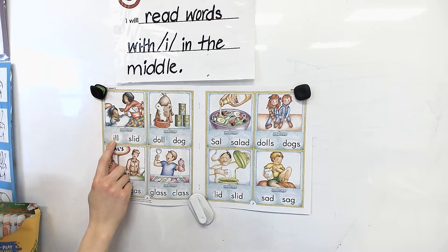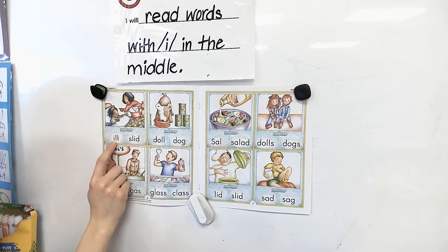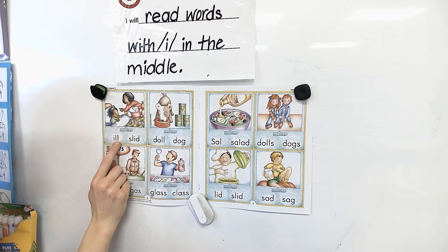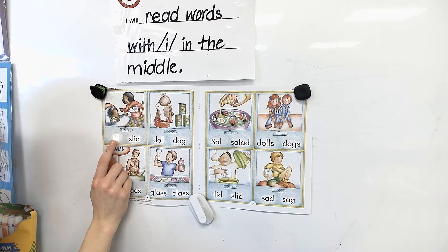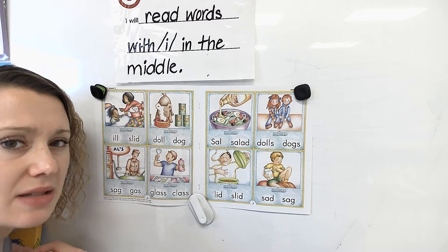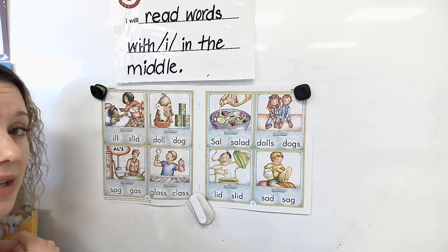I want you to touch underneath the I. We're going to blend these and read them together. Ready? I says ih, L says l. And when there's two of the same letter, we just say it one time. So read it again with me — ih, l. Ih, l. Do it a little faster — ill. Ill. So this word says ill. Do you remember what ill means? If someone's ill, that means they are sick.